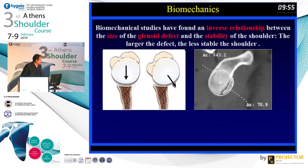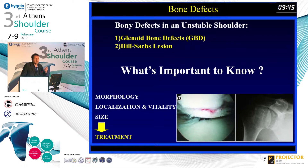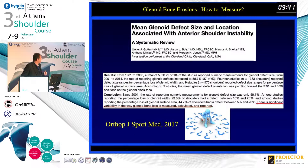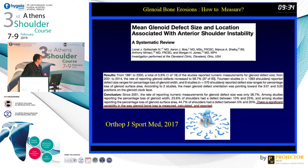I don't focus only on bone defects, but we all know that they are important — we need to look for them. About 90% of unstable shoulders have some kind of bone defect, so it is very important to have a diagnostic algorithm. There are several methods, and there is significant variability in the way glenoid bone loss is measured and calculated.